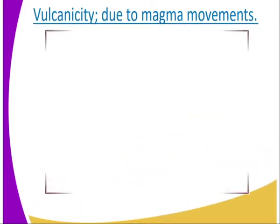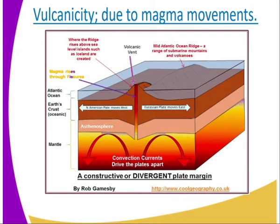Another cause is volcanicity. This is due to magma movement. When the magma is moving, as you can see in that diagram, as it is finding its way to the crust, it causes the rocks — the crust of rocks — to move either horizontally or vertically. Hence, as it is moving, it results in the shaking of the earth crust.